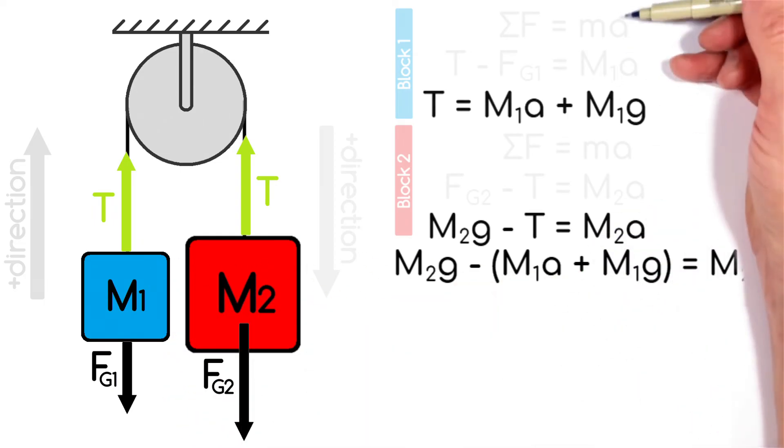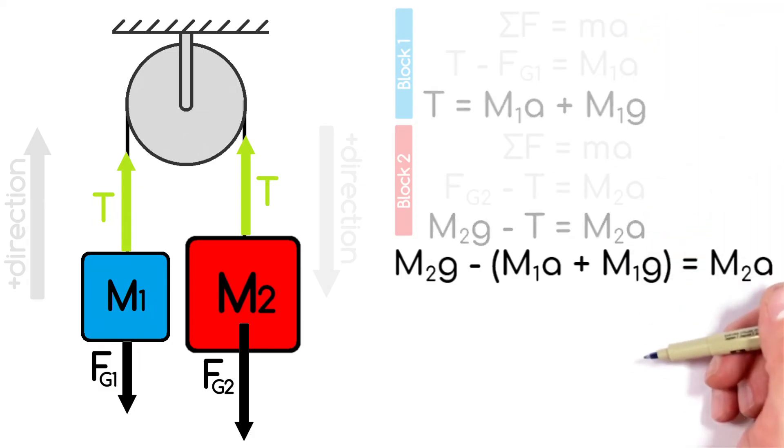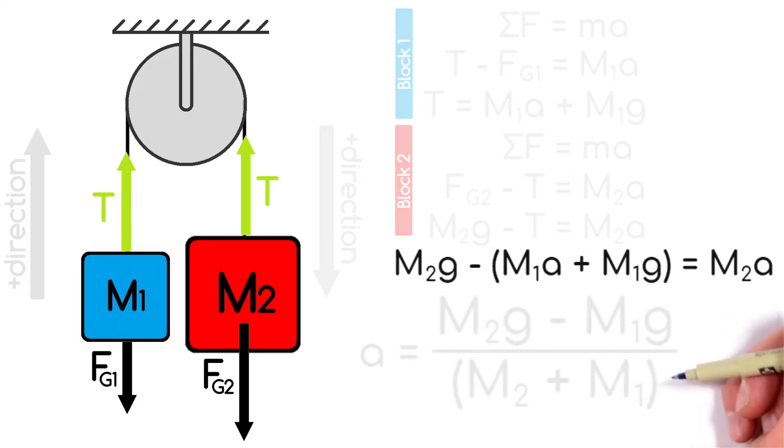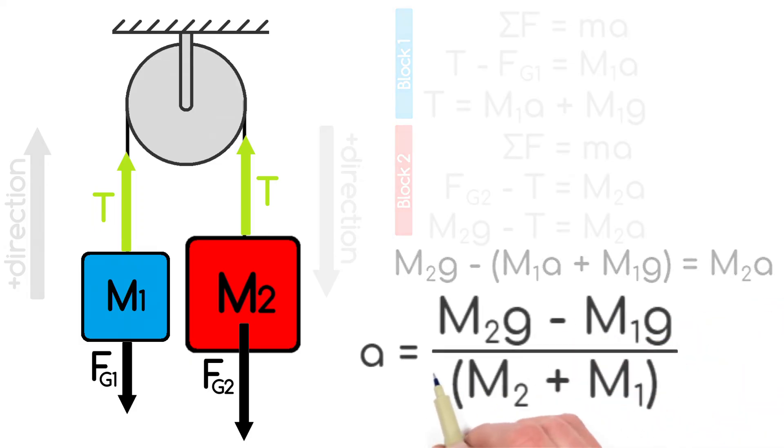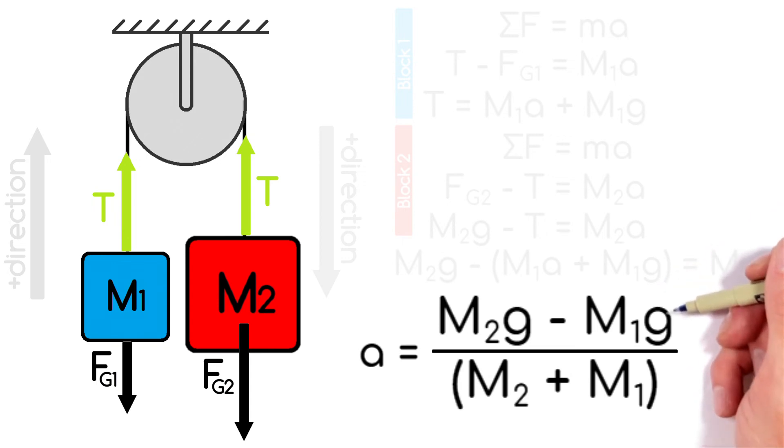Now realize, at this point the physics is done. All that's left is some algebra here. And working through that algebra, you finally get this equation for the acceleration of the system as a function of the two masses and gravity.